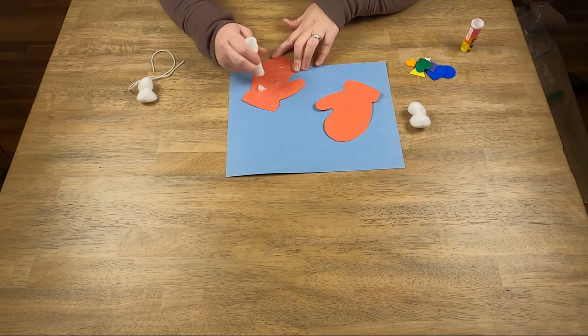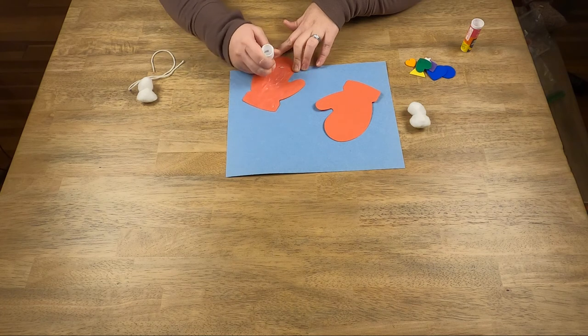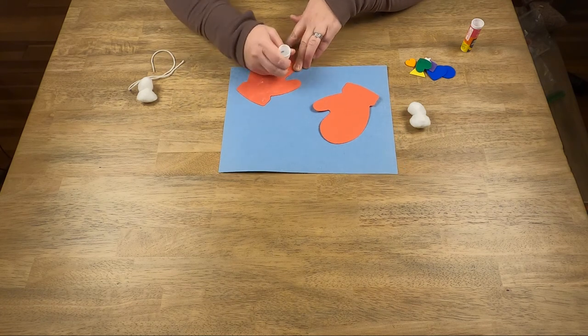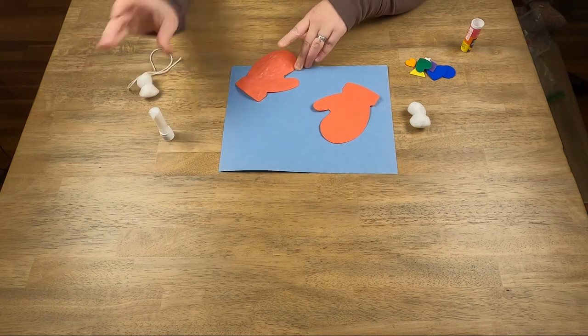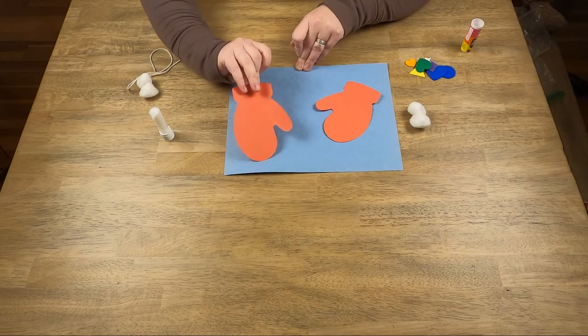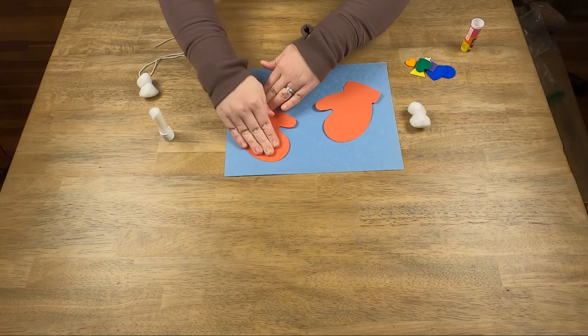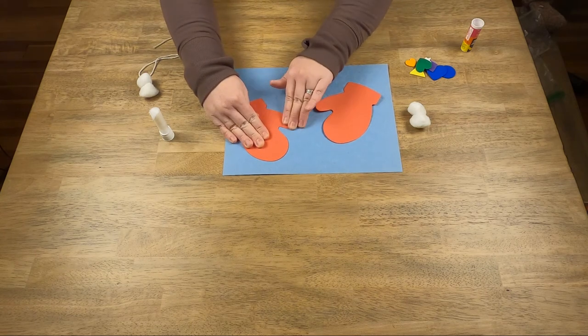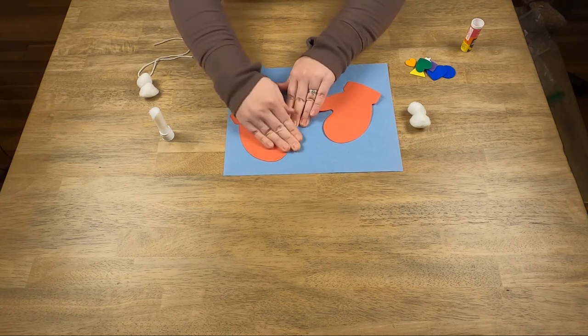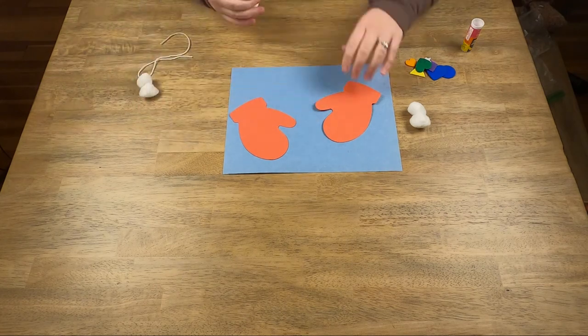Flip it over and cover with glue. Oops, big blob. Put the glue down, flip it over, place it about where you want it, and then press down nice and hard on the whole piece. There's my first mitten.